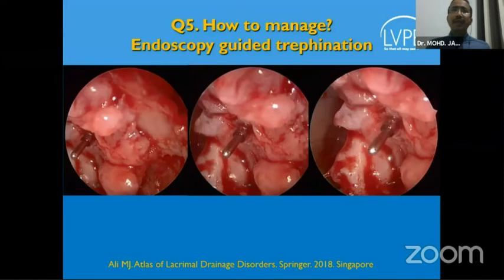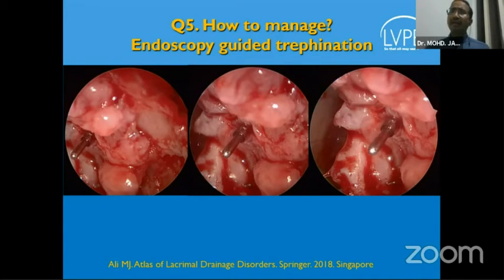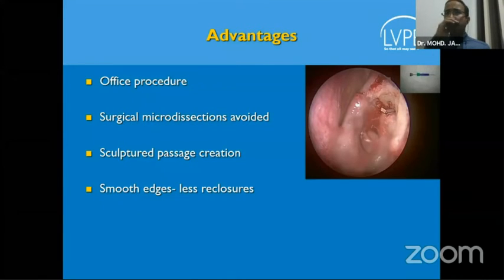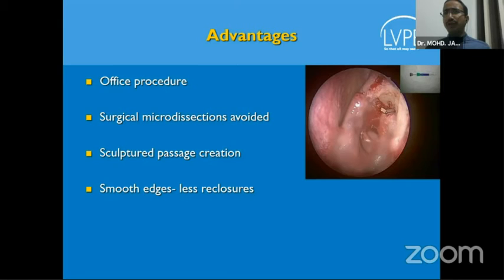This is an example of how you can sculpt canalicular obstructions from within the lumen and achieve very decent results. For a good chunk of cases, I also believe in doing an endoscopic-guided trephination, where I've opened up the lacrimal sac and under guidance I'm navigating the trephine. We have published the details of the indications for these approaches, and there are a lot of advantages — including how beautifully the canalicular lumen can be sculpted.